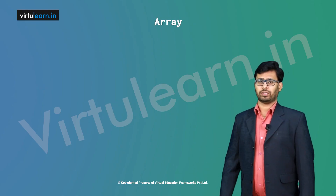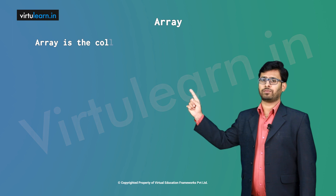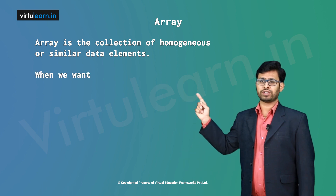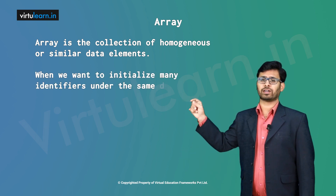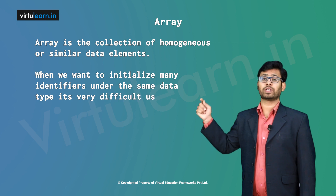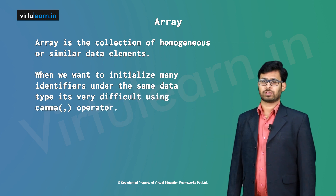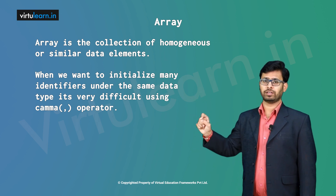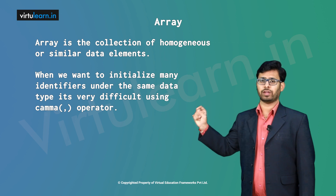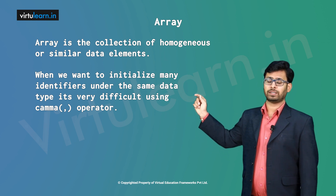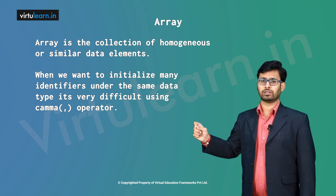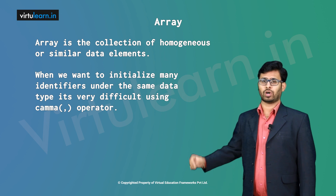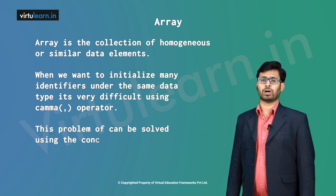Arrays. What is an array? An array is a collection of homogeneous or similar data elements. When we want to initialize many identifiers under the same data type, it is very difficult to use the comma operator. For example, if you want to initialize 100 integer identifiers, you can write int a1, a2, a3, and so on till a100. It is very difficult to identify which identifier is used for what purpose. So in order to solve this problem, we can use the concept of arrays.